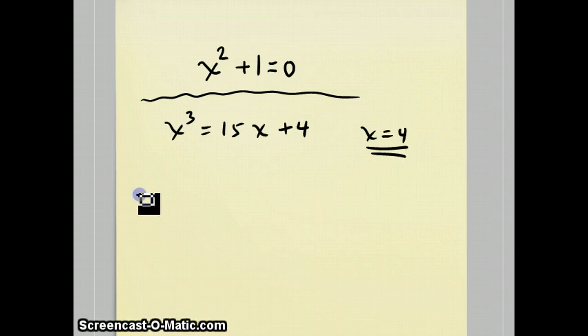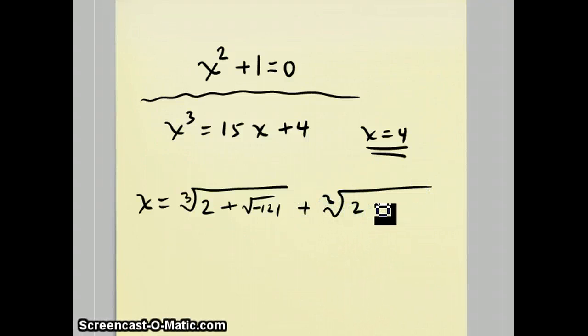But when you run this through the depressed cubic equation, it becomes this: the cube root of 2 plus the square root of negative 121 plus the cube root of 2 minus the square root of negative 121.